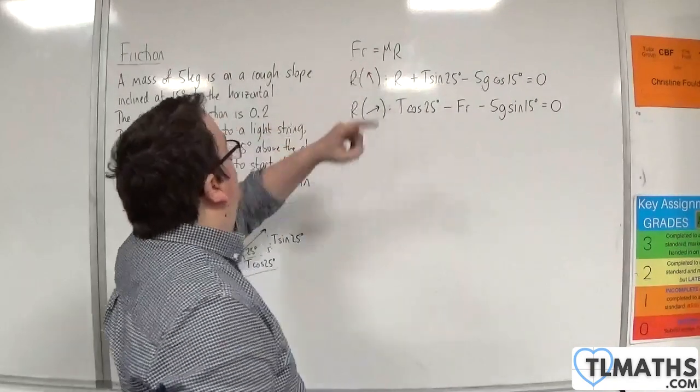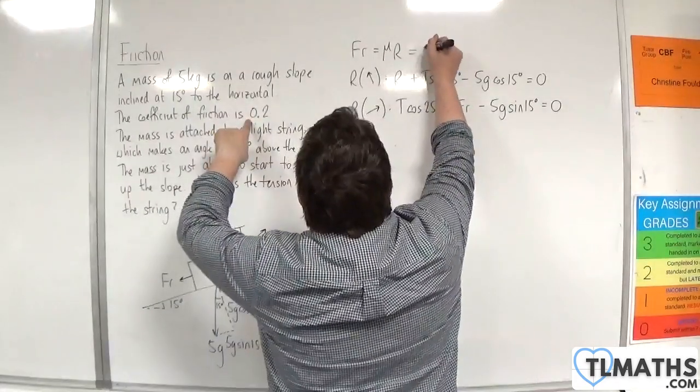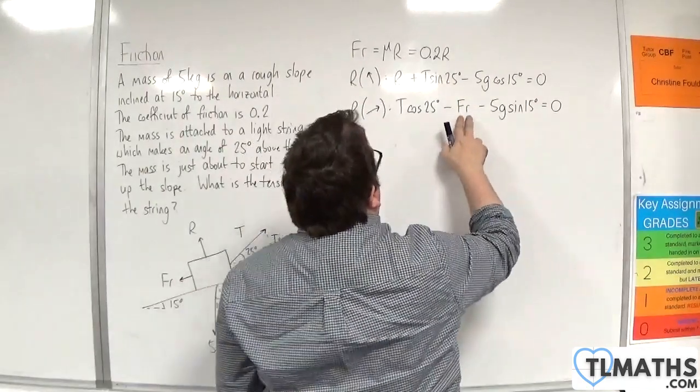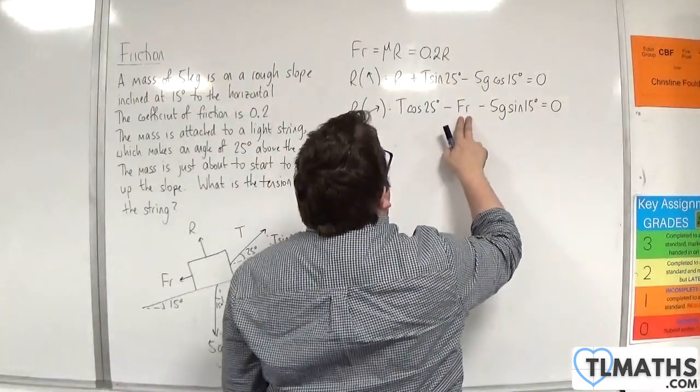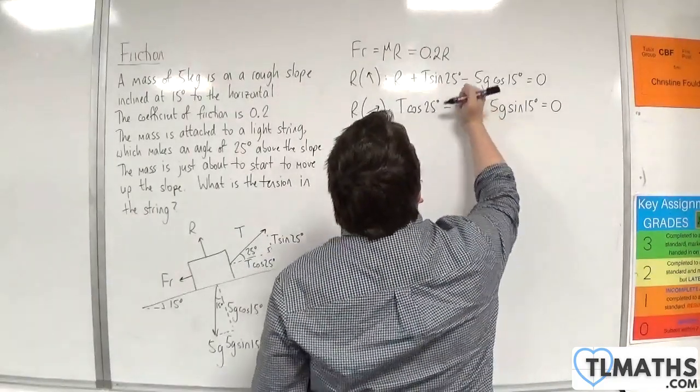Now, we know that the friction is equal to mu times r, and mu is 0.2, so this is 0.2 times r. So I can replace the friction there with 0.2r. I'm going to do that now.